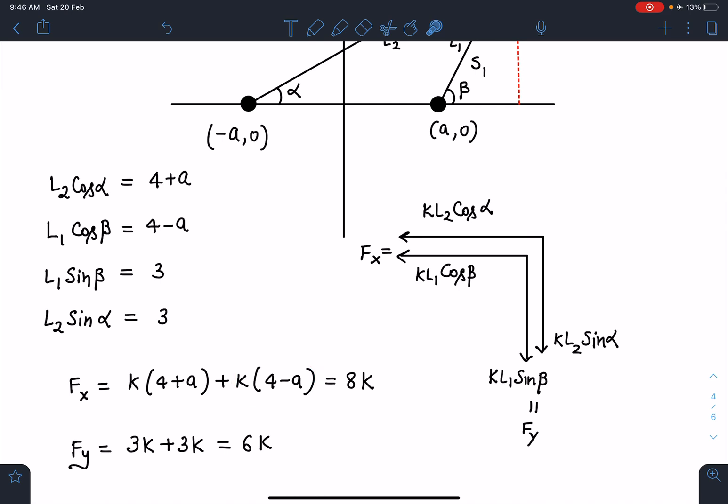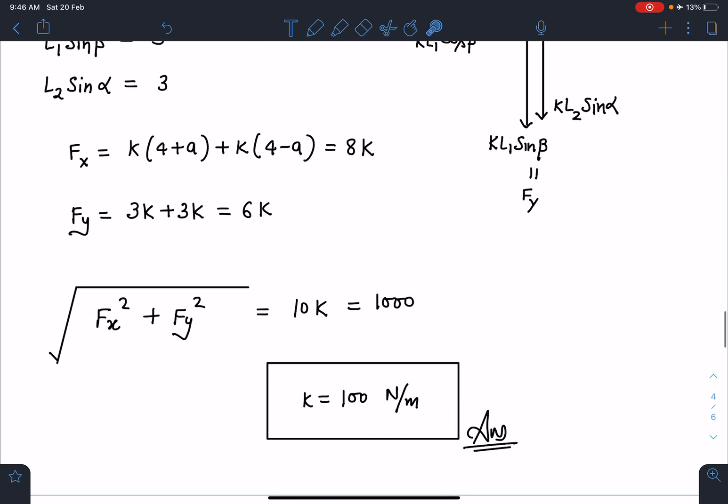The overall force in x direction becomes 8k and Fy is 3k plus 3k which is 6k. Since 1000 Newton force is balancing it, Fx² + Fy² which gives 10k must equal 1000. We get k as 100 Newton per meter. This is the final answer for this problem.